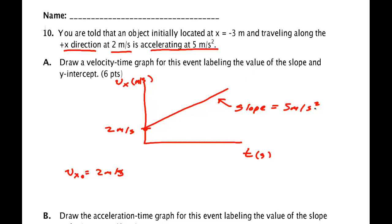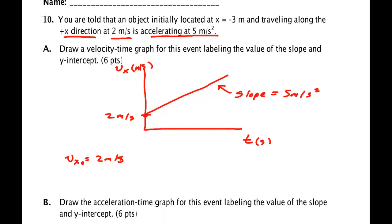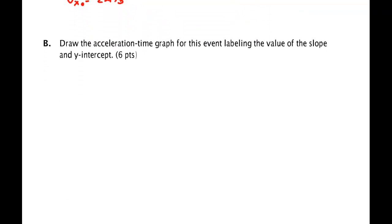And it's 5T plus 2 is the equation. Draw the acceleration time graph for this event labeling the slope of the Y intercept. So AX in meters per second squared, time in seconds.